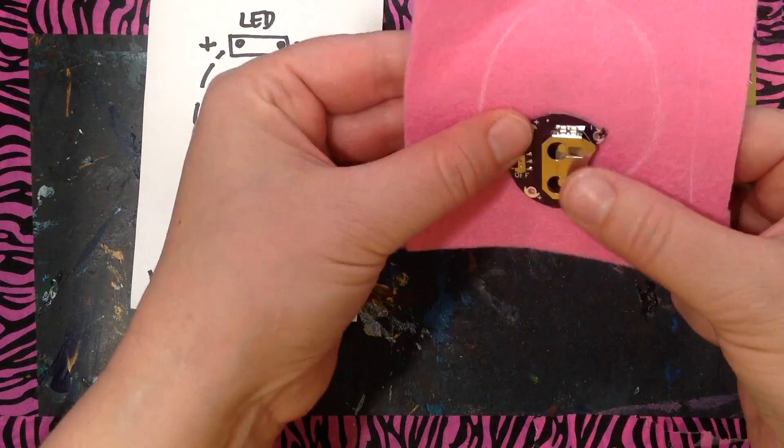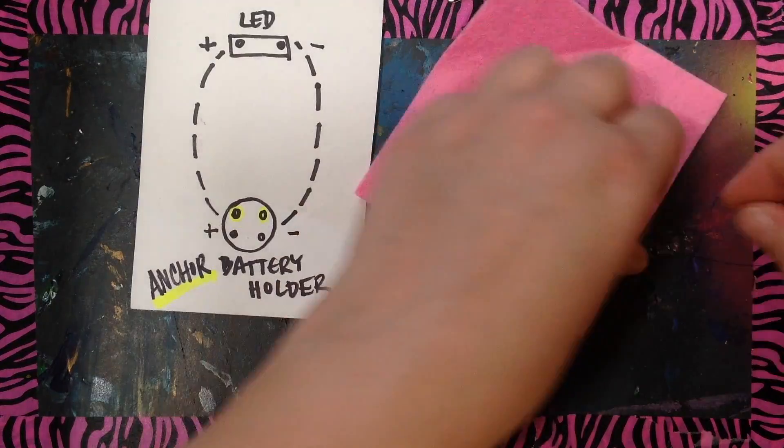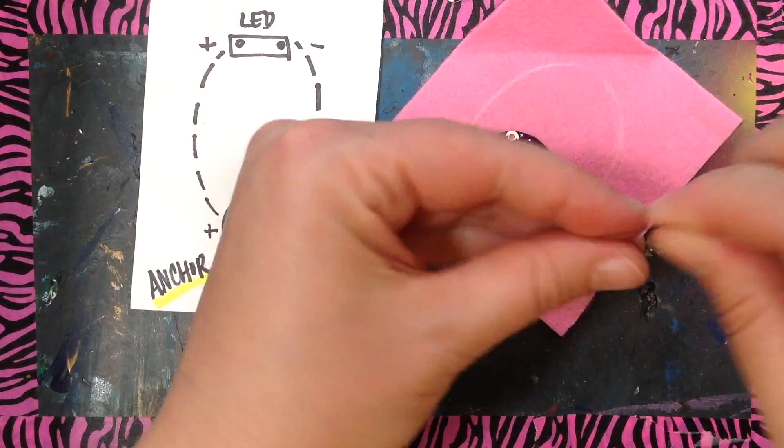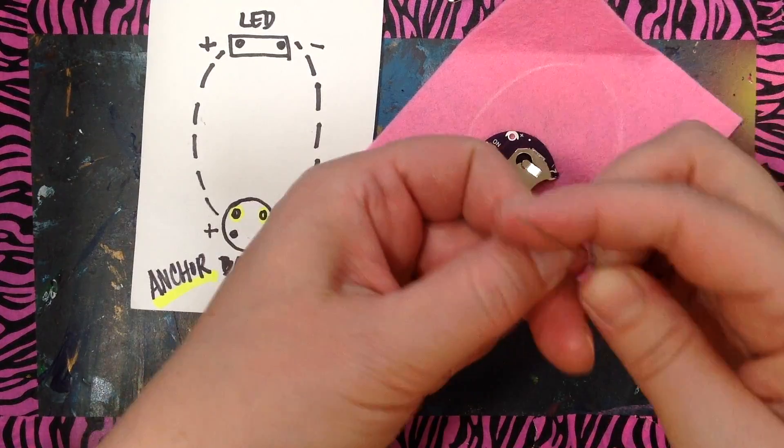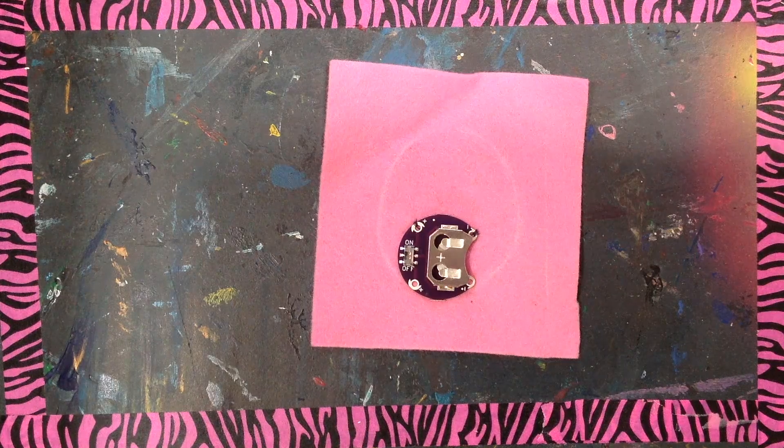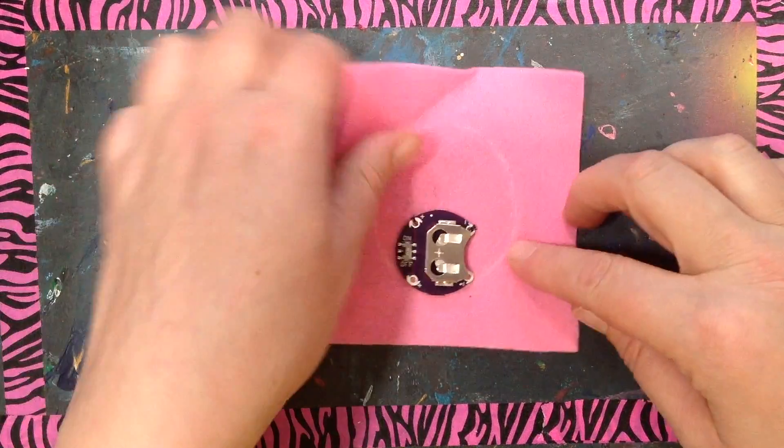So you see with it just anchored on one side, it's kind of floppy. So I'm going to hold it in place. And now I need another knot, right? So I'm going to tie another knot here. It's going to need to be a pretty thick knot because the needle I'm using. So at this point I have the battery holder anchored.